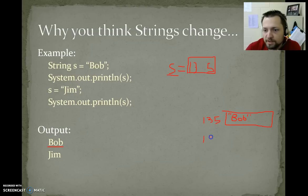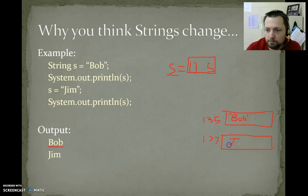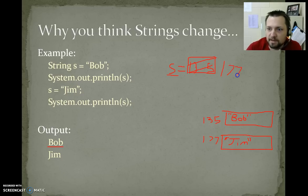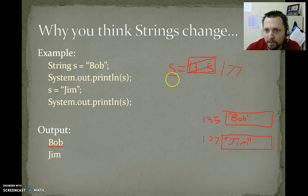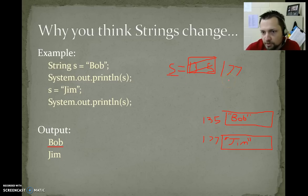We might now store Jim at a new memory address, say 1, 7, 7. So s would be changed and no longer store 1, 3, 5 — s would store 1, 7, 7. The container that can hold a string now contains a new object. It's pointing to a new memory location.